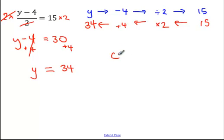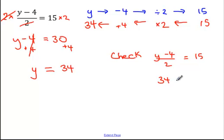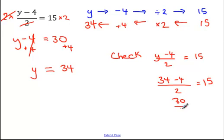Let's check. y minus 4, divided by 2, equals 15. y we got was 34, so substitute that in. 34 minus 4 is 30, divided by 2. 30 divided by 2 is 15, and 15 is equal to 15. So we're good.